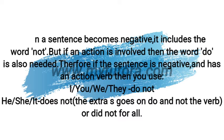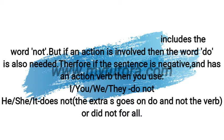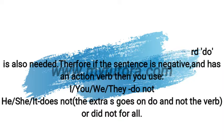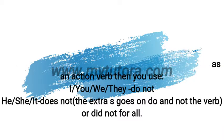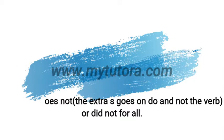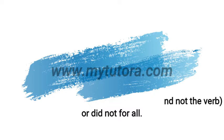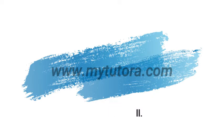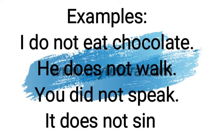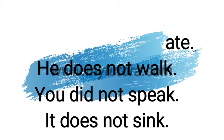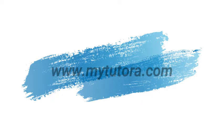For he, she, it, we use does not. And the extra S goes on do and not the verb. Or did not for all. For example: I do not eat chocolate, he does not walk, you did not speak, it does not sink.